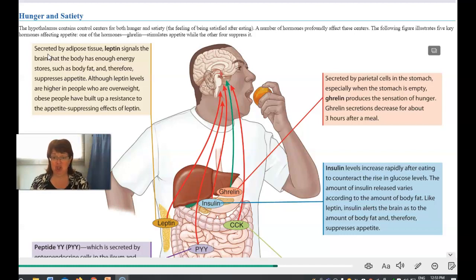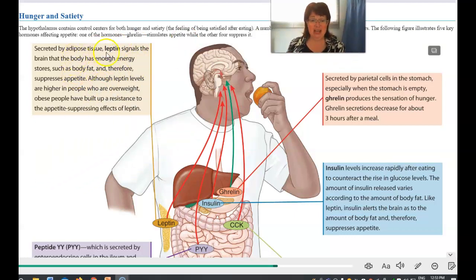One of the hormones suppresses appetite, while ghrelin stimulates appetite. Let's look at it. We've got leptin up here. Secreted by the adipose, leptin signals the brain that the body has got enough energy storage, such as body fat, therefore suppresses appetite.